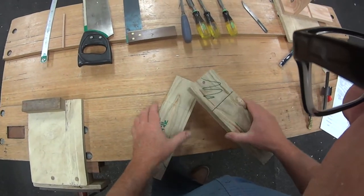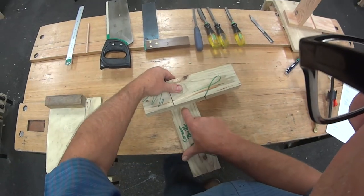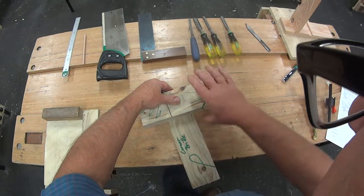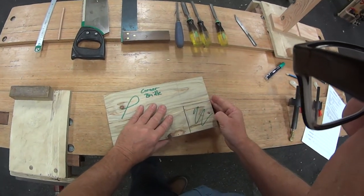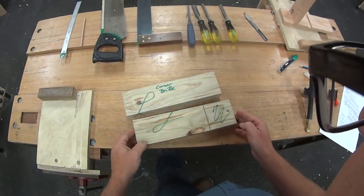Okay, so distance as always: width plus two. I then put them together, squared the line across after I'd already picked the best sides for the face sides.